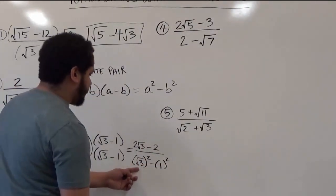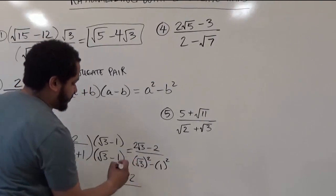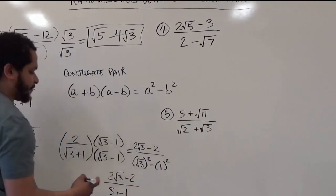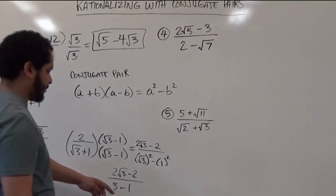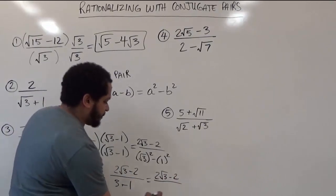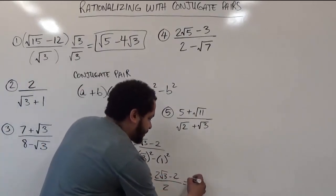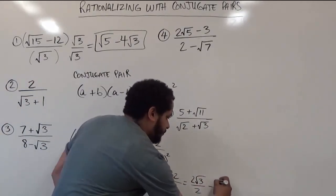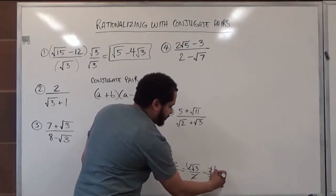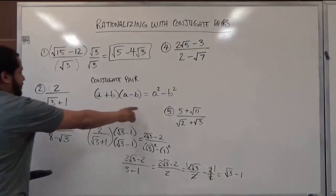For the denominator, the square root of 3 squared becomes just 3, and 1 squared is also just 1, with a difference sign between them as it's the difference of two squares. We simplify to get the numerator over 2. This 2 can divide each term perfectly, so we separate the fractions: these 2's cancel to 1, and these 2's reduce, leaving us with just radical 3 take away 1. That's the solution for this problem, and this is how we use the conjugate pair.